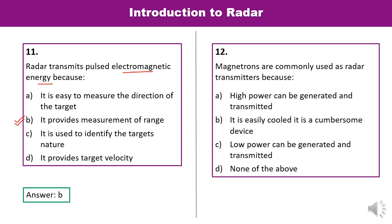Question 12: Magnetrons are commonly used as radar transmitters because? Microwave devices are used in the transmitter because they can generate high power and transmit it. Reading all options carefully, A is the correct answer — high power can be generated and transmitted.